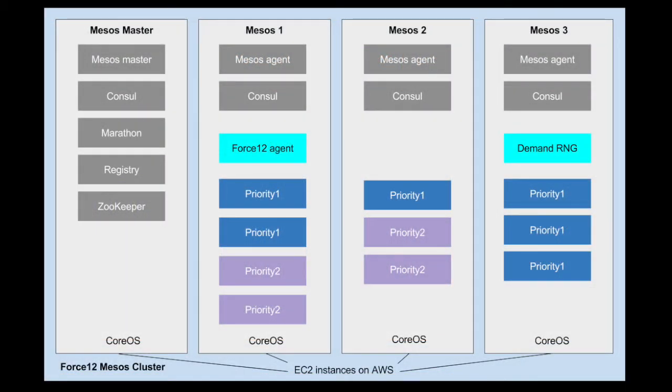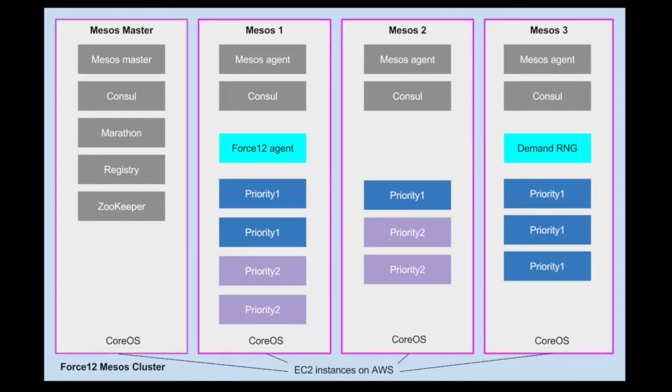Our cluster has four virtual machines on EC2, all running CoreOS. One of these VMs acts as the Mesos master, and the rest are agents.